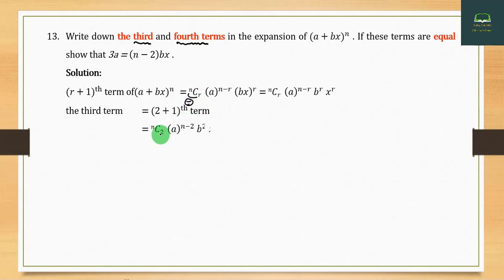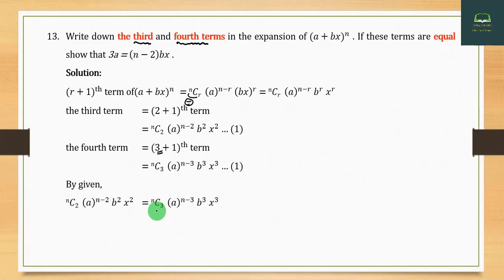Solution: (a + by)ⁿ term of (a + by)ⁿ. The third term is nC₂(a)^(n-2)(by)². The fourth term is nC₃(a)^(n-3)(by)³. Setting them equal: nC₂·a^(n-2)·b²y² = nC₃·a^(n-3)·b³y³.